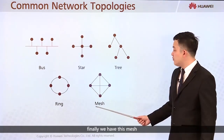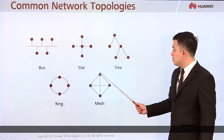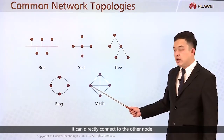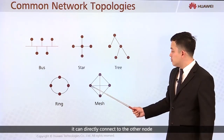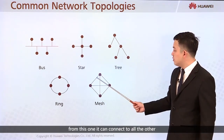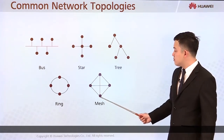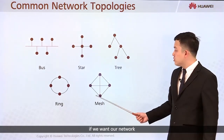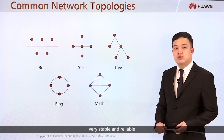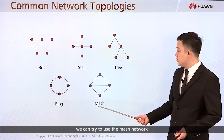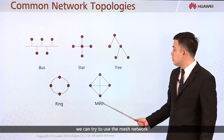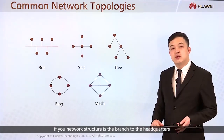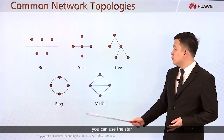Finally, we have the mesh network. In a mesh topology, each node can directly connect to every other node. If we want our network to be stable and reliable, we can try to use the mesh network.